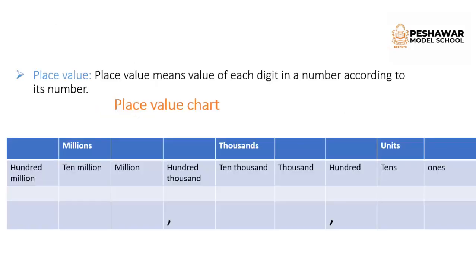The next topic is place value. Place value means the position of a digit in a number, or we can say place value means the value of each digit in a number according to its position. Now, boys, look at the slide — you can see the place value chart.